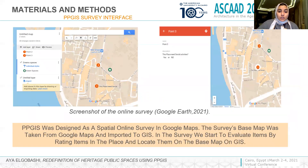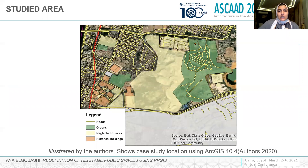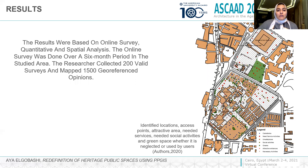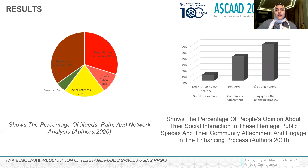This is the PPGIS interface. After completing that step, we translated the maps into GIS. Here is the base map of the studied area produced by GIS. Here is the participatory map generated after conducting a 200-respondent survey and mapping 1,500 geo-referenced opinions.